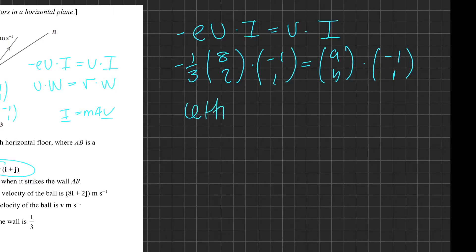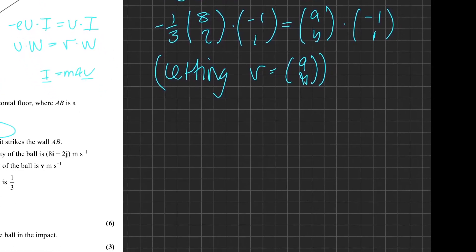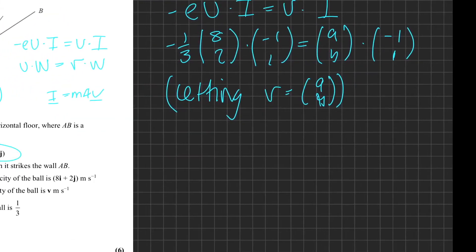Now what I'm going to do is I'm going to make v equal (a,b), so I'm going to say to the examiner 'letting v equal (a,b)' so they know what I've done. Let's start doing stuff with this equation then. We've got the -1/3 out the front - that's just a scalar, that's our e. What's in the brackets? Well, we've got 8 times -1 plus 2 times 1, so that's -6.